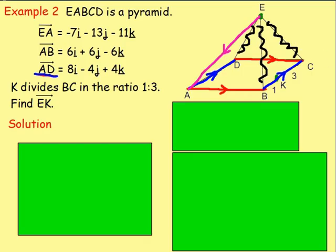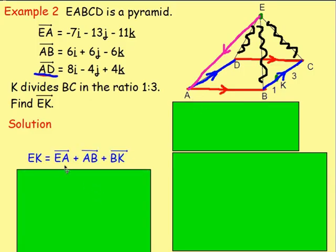We can only go along the known colored lines. To go from E to K, one way is to start at E and come down to A — going from E to A. From there, once we are at A and want to get to K, the obvious way is going from A to B, so we add on AB. From there, to get to K, we're going from B to K. Although we are told BC, it's part of that vector, so we're using just the portion from B to K.